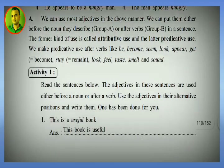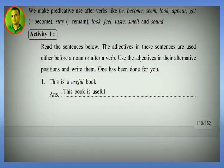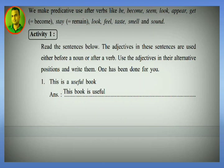Activity one. Read the sentences below. The adjectives in these sentences are used either before a noun or after a verb. Use the adjectives in their alternative positions — if before a noun, change to after a verb; if after a verb, change to before a noun. For example: 'This is a useful book' — attributive use, adjective 'useful' before noun 'book'.